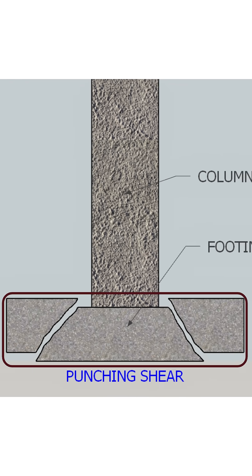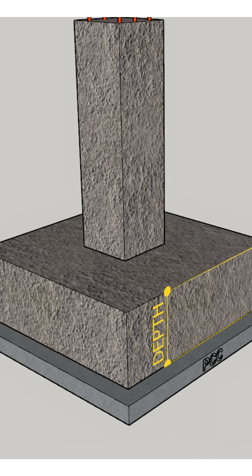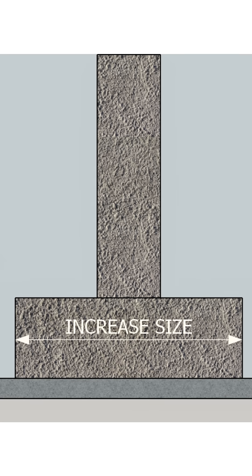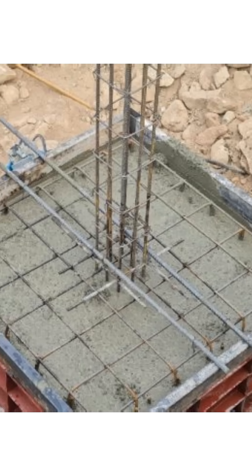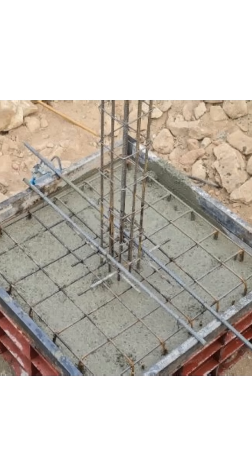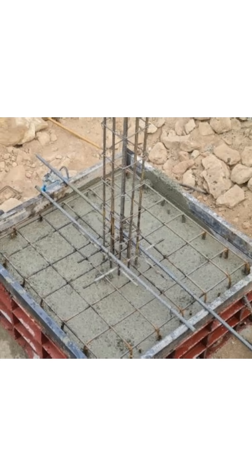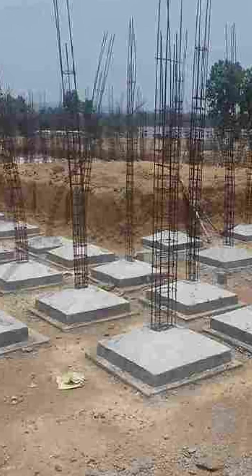Now, to resist this punching action, we have two options. Option 1: increase the depth of the footing. Option 2: increase the size of the footing. But both options have drawbacks. A deeper or larger footing means more cost, and increasing the column size may not be allowed by the architect.